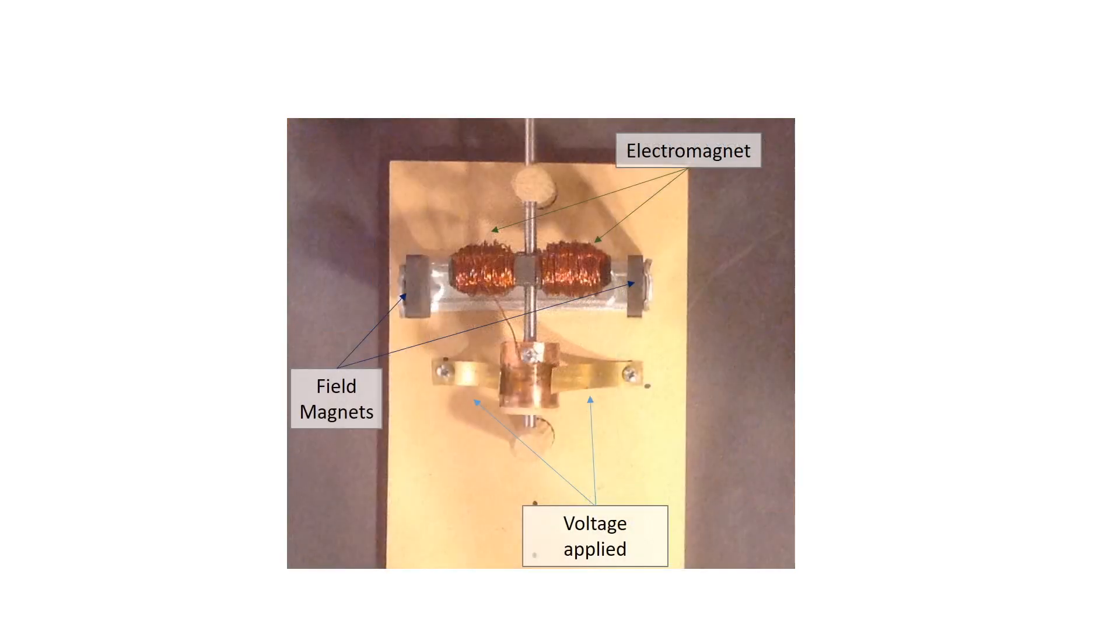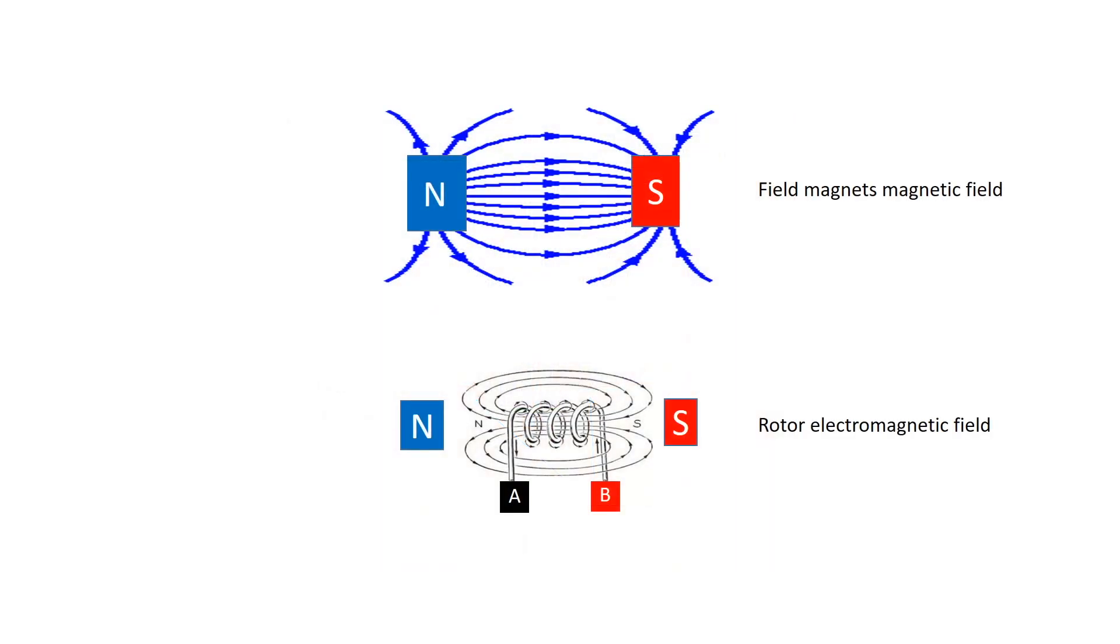Now, if we have current flowing through the rotor due to voltage applied through the brushes, and we also have a magnetic field induced by our field magnets, we can have two magnetic fields occupying the same space. And what's interesting about this is that those fields may be aligned in the same direction as shown in this graphic. And what you may remember from playing with magnets as a kid is that likes repel where opposites attract.